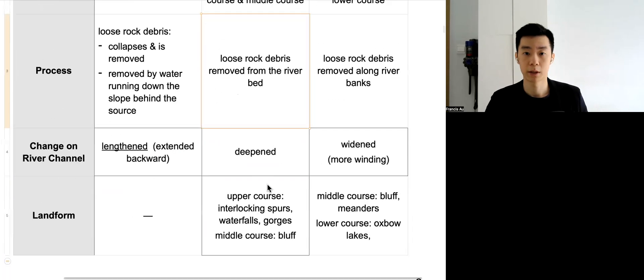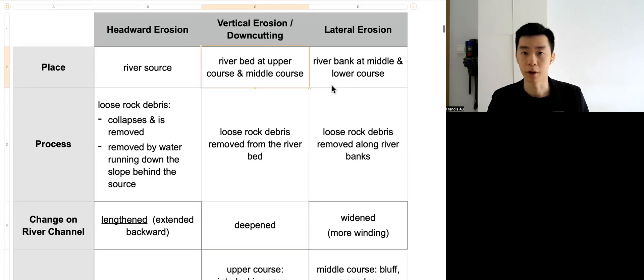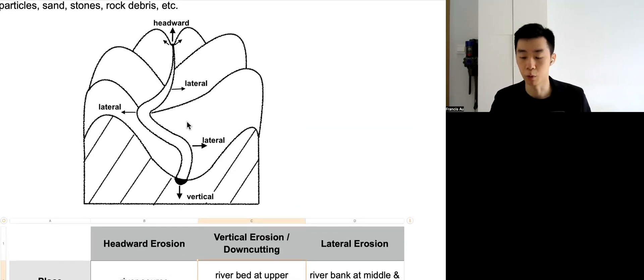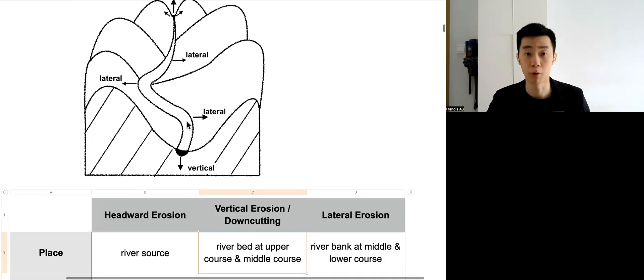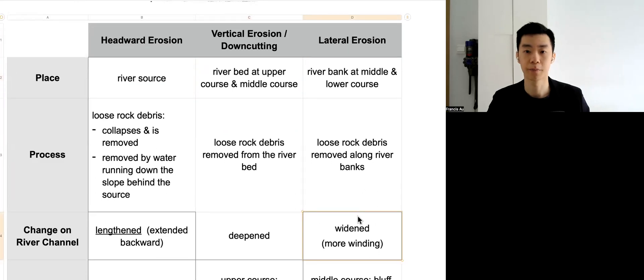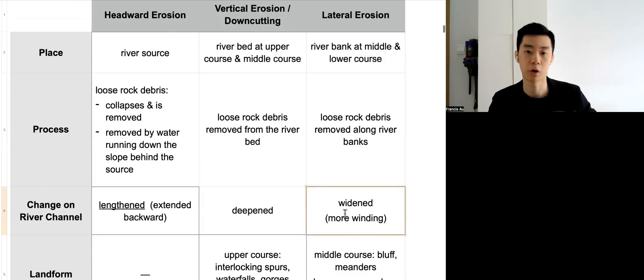You can see there are different landforms associated with vertical erosion. We're going to cover that later on. Next, we have lateral erosion. Lateral erosion is eroding the river bank on both sides. It's going to widen the river channel. You can see the river channel is more widened or more winding, meaning it's more curvy. Rather than being a very straight channel, we have a river channel that's going sideways, something like that.